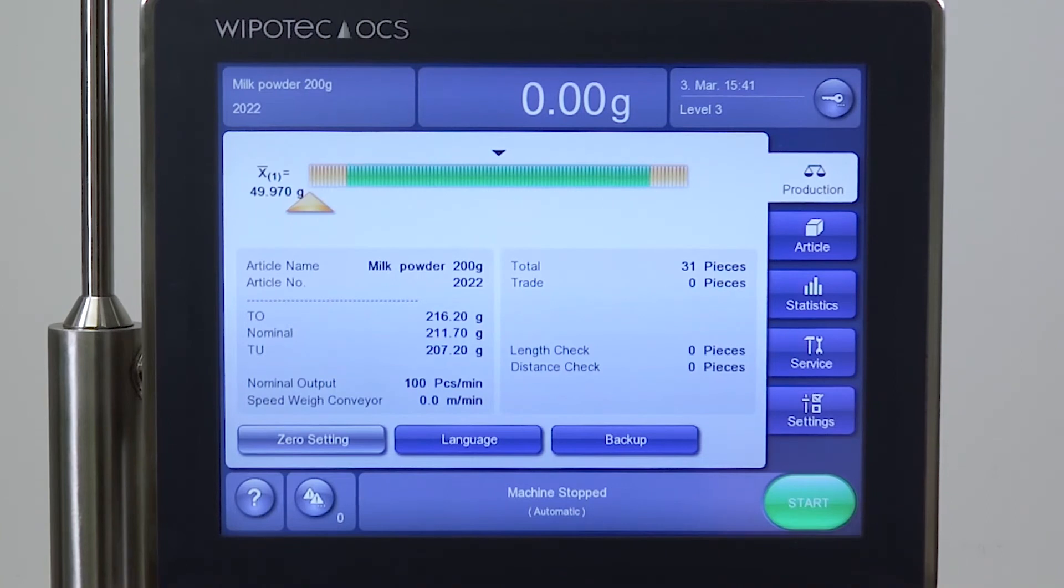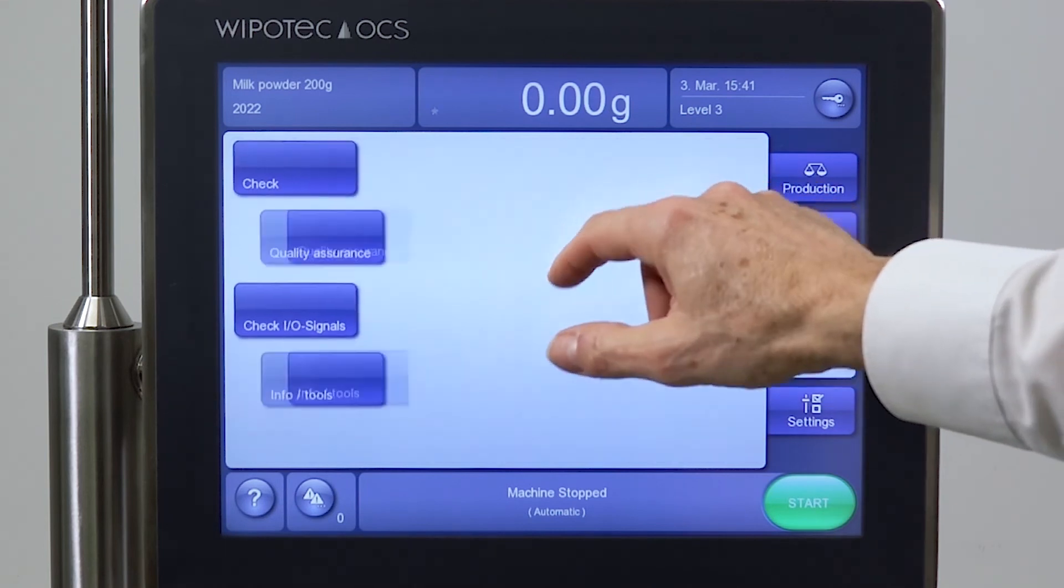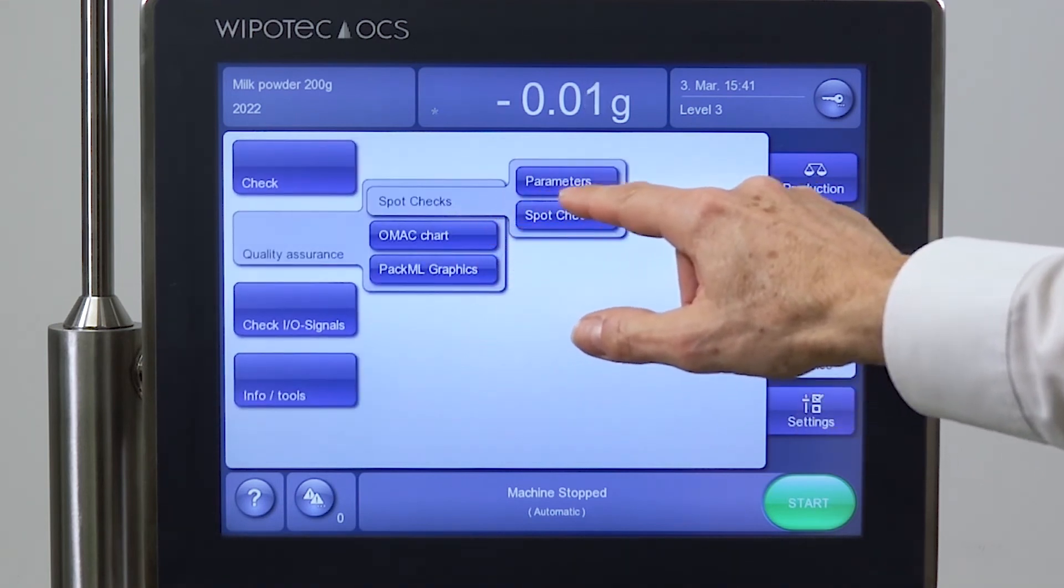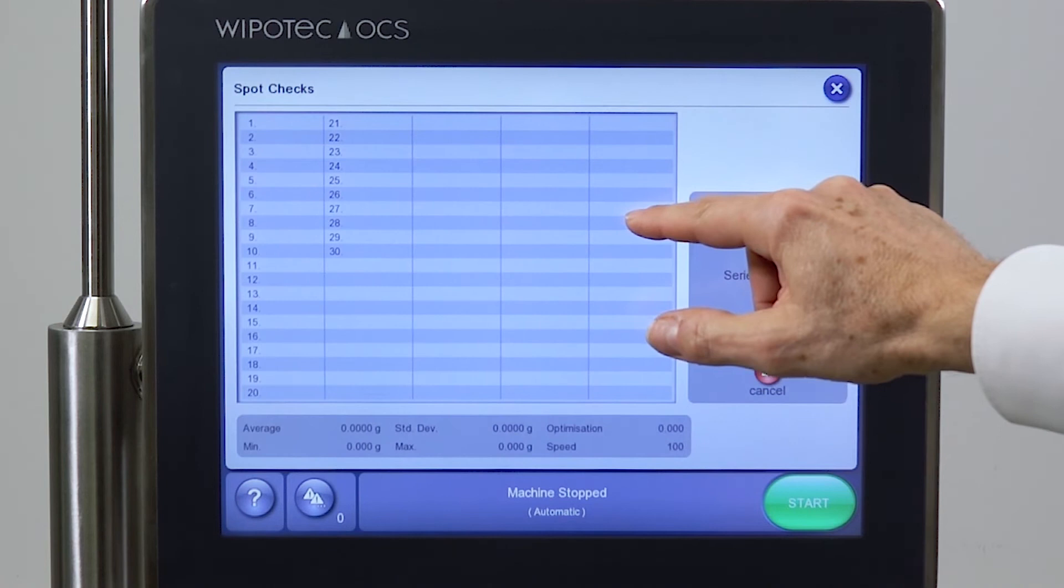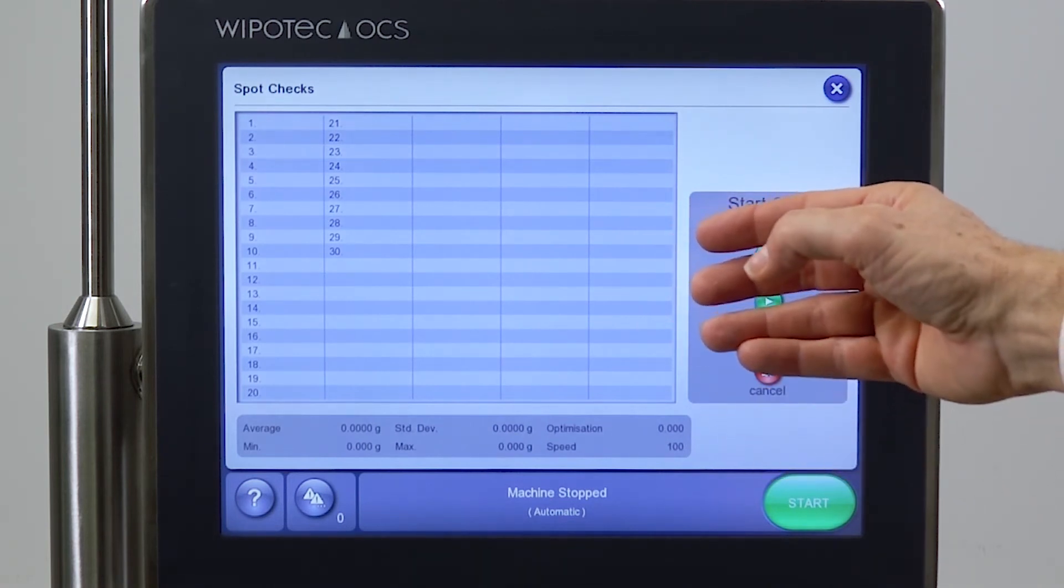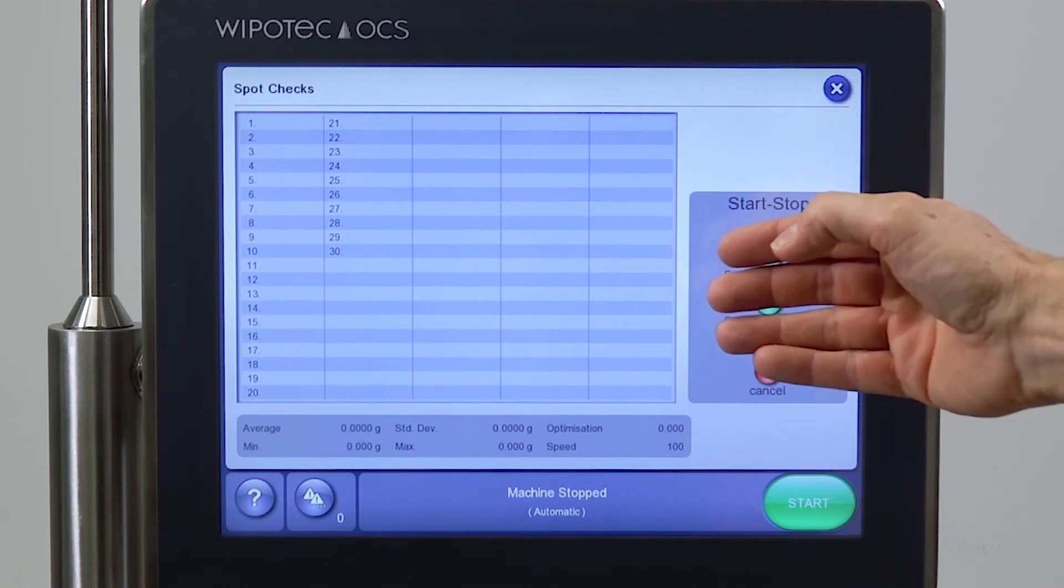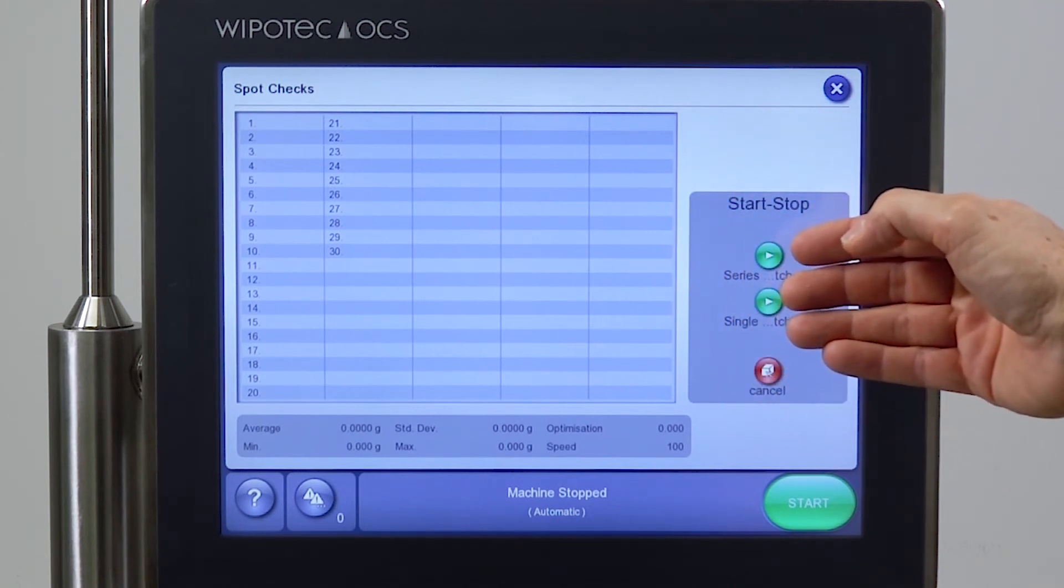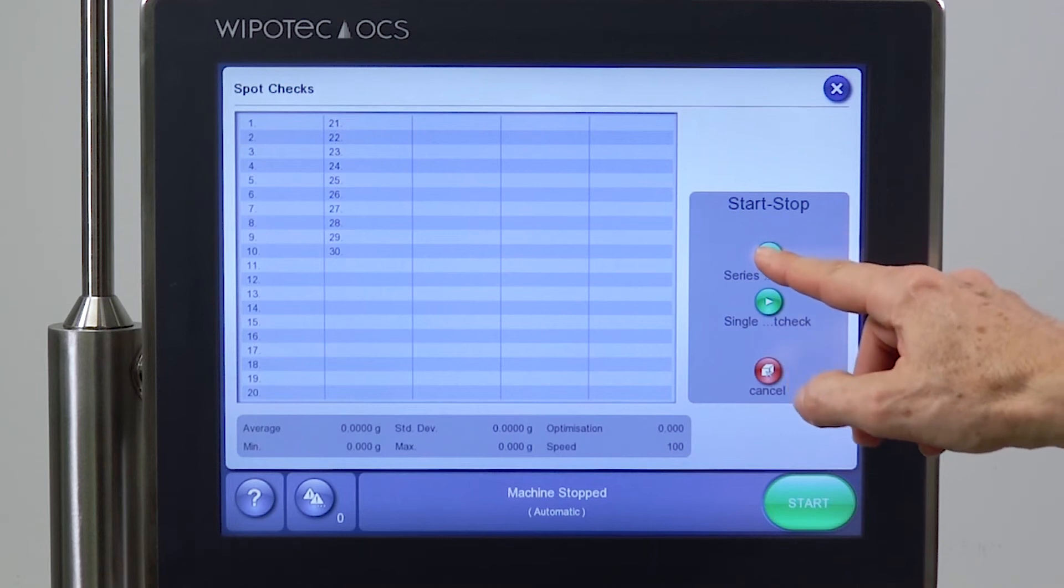In order to verify the uncertainty of a checkweigher we could enter the spot check mode and try with the spot check to see what is the repeatability of a product. In our case we would be using 30 times the trigger of the weigh cell to verify a weight stone of 50 grams.